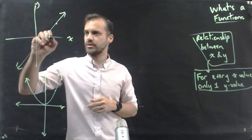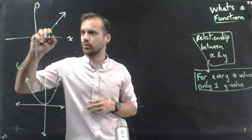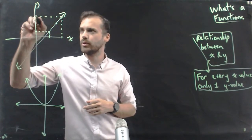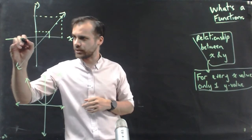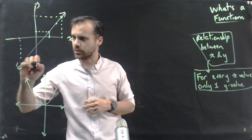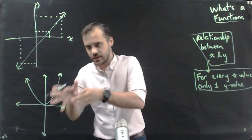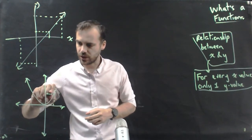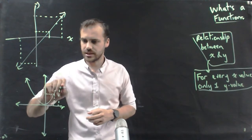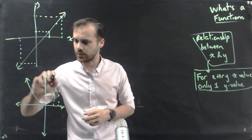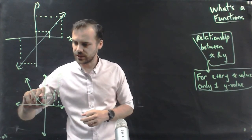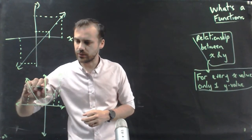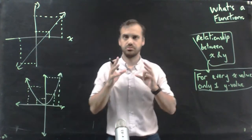For this x-value, there is only one y-value. For this x-value, there is only one y-value. For this x-value, there is only one y-value. Down here, same thing. For this x-value, there is only one y-value. For this x-value, there is only one y-value. For this x-value, there is one y-value, and for this x-value, there is one y-value. Good.